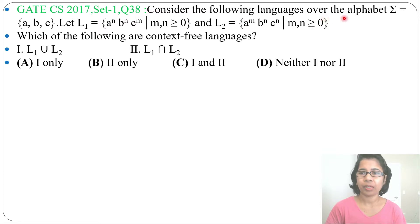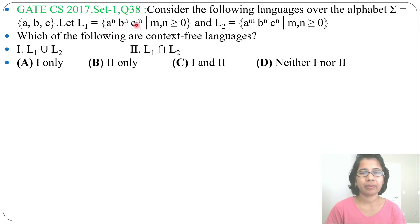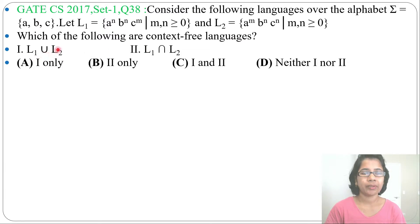Consider the following languages over alphabet {A, B, C}. Let L1 = AⁿBⁿCᴹ where M, N ≥ 0 — meaning equal number of A's followed by equal number of B's followed by any number of C's. And L2 = AᴹBⁿCⁿ where M, N ≥ 0 — meaning any number of A's followed by equal number of B's followed by equal number of C's. Which of the following are context-free languages? First, L1 union L2; second, L1 intersection L2.